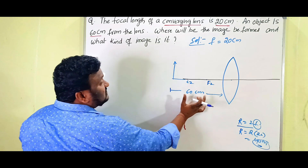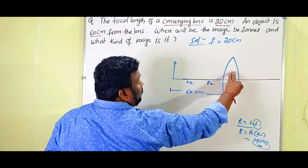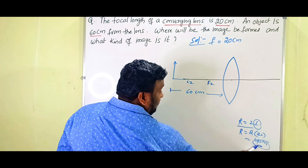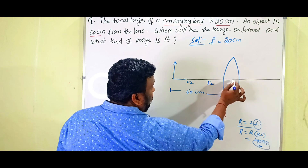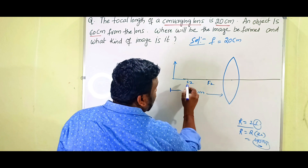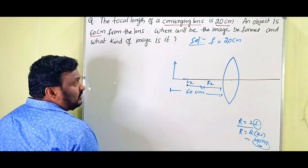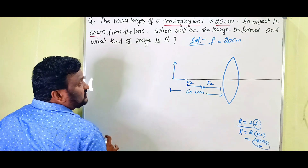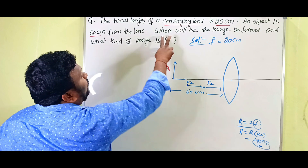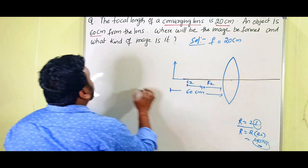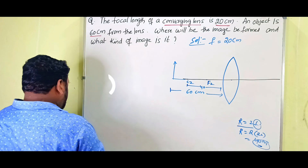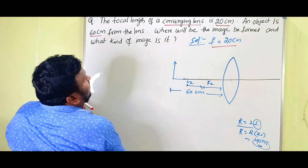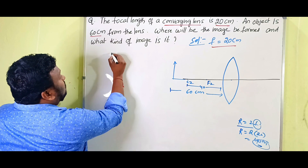Using the relation R equals 2f, with focal length 20 centimeters, we get the radius of curvature as 40 centimeters. The distance from the optic center to the center of curvature is 40 centimeters. Since the given object distance is 60 centimeters, the object is beyond the center of curvature. We need to find where the image is formed and what kind of image is created.